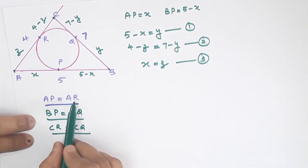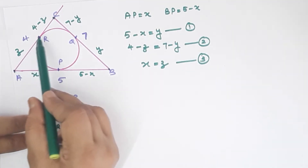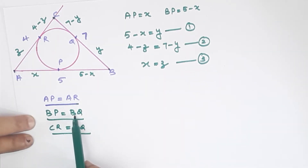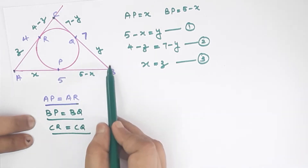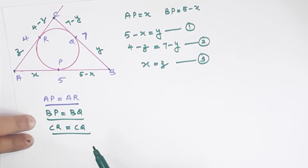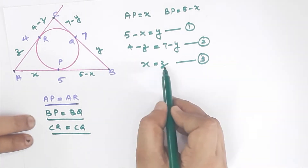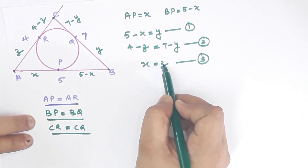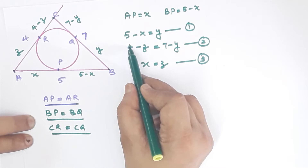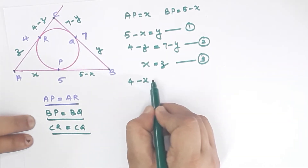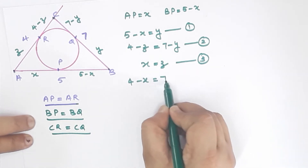AP equals AR, so x equals z. BP equals BQ, so 5 minus x equals y. Now substituting x equals z into equation 2: 4 minus x equals 7 minus y.